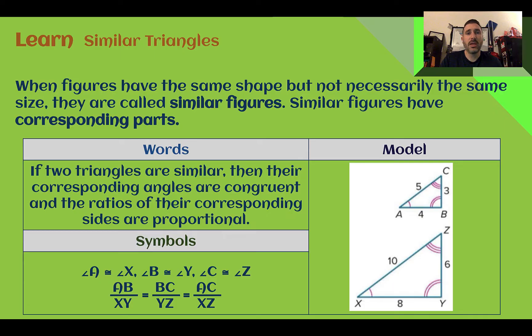So if two triangles are similar, then the angles within those triangles are congruent, or they're the same, and the ratios of their corresponding sides are proportional.